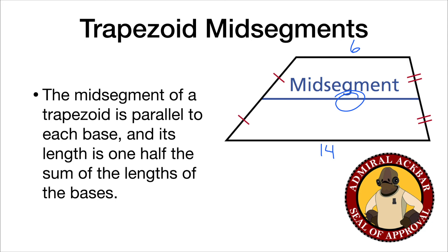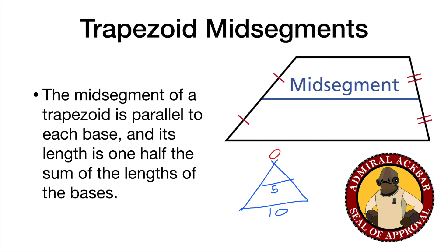The triangle mid-segment theorem is actually secretly the same rule. If the triangle has a base of 10 and mid-segment of 5, the missing top vertex has length 0. So 10 plus 0 divided by 2 also equals 5, meaning the trapezoid mid-segment theorem also works for the triangle mid-segment theorem.